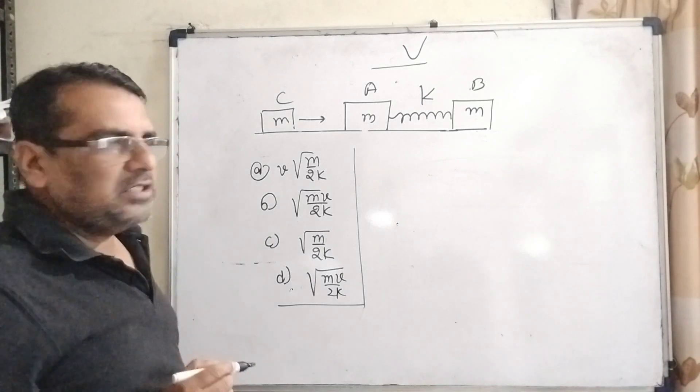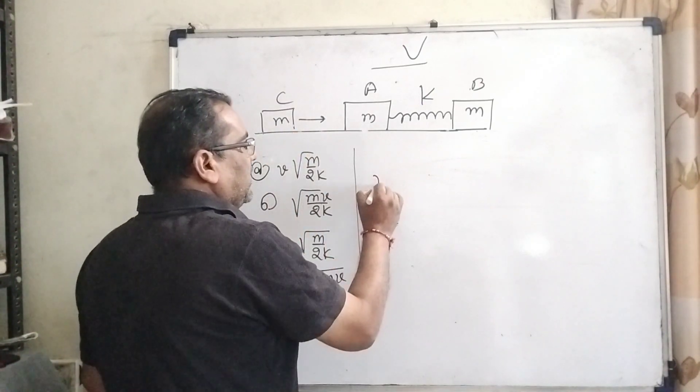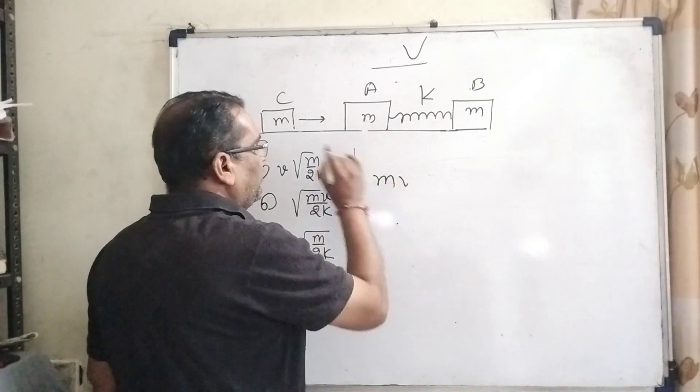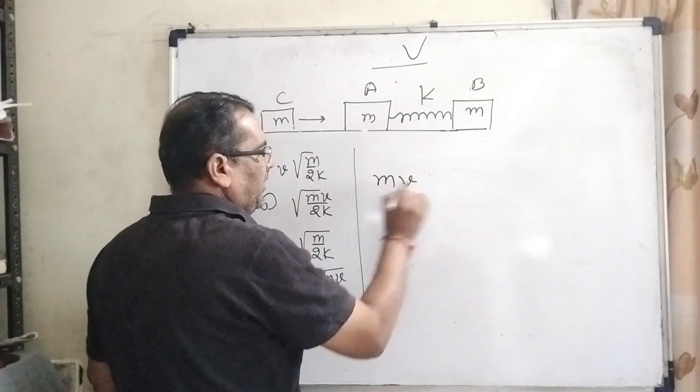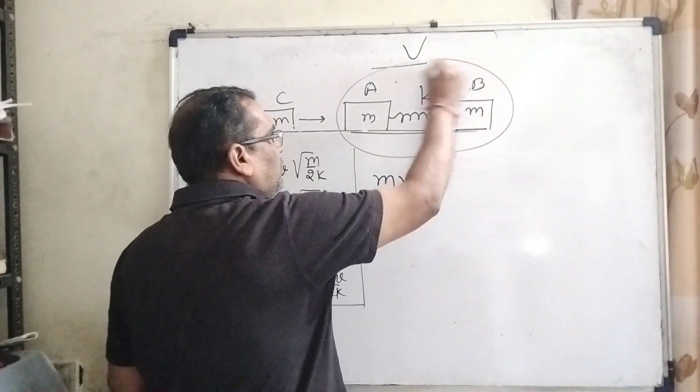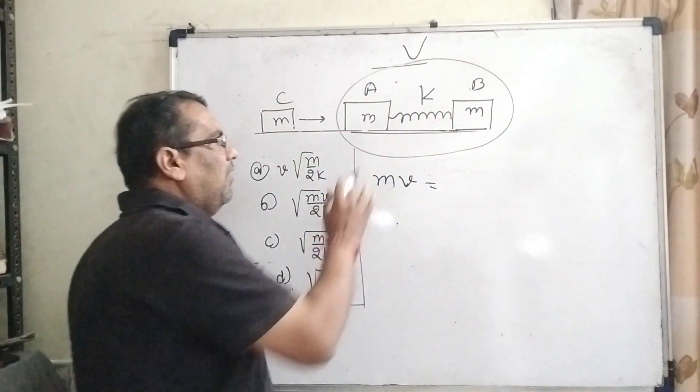According to the law of conservation of momentum, you can see here the initial momentum of block C is mv, and here both blocks work as a system of two blocks.